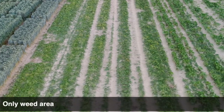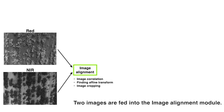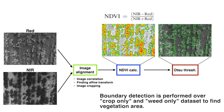Now we have collected three datasets. After the data collection, we extract NDVI from the crop-only and weed-only datasets to create a training dataset. First, the RED and NIR images are fed into an image alignment module. Then, NDVI is calculated using the equation above the figure. Finally, boundary detection is performed over the extracted NDVI using an intensity histogram clustering algorithm.